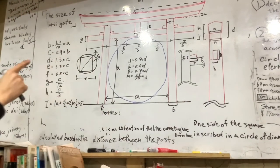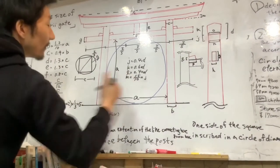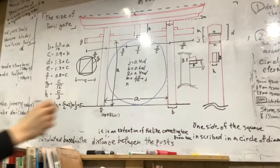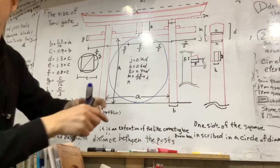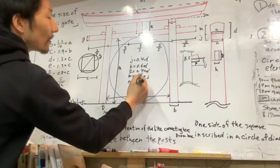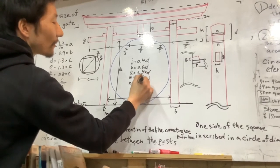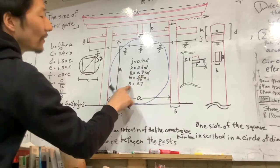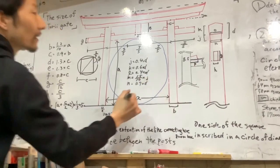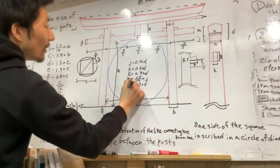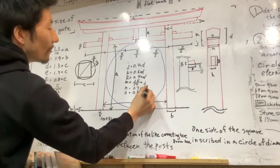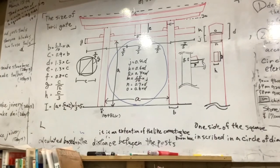N. N is this distance, so N is equal 0.7 by D. O is 0.8 by D. Okay, J. N here we go. Thank you.